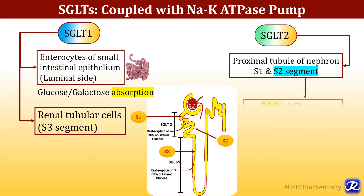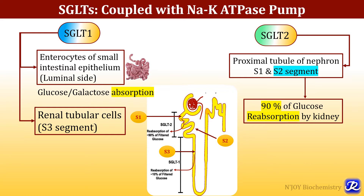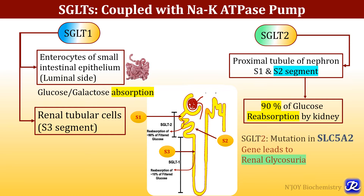SGLT2 is located in the proximal tubule of the nephron, specifically in the S1 and S2 segments. Ninety percent of glucose reabsorption by the kidney occurs in the S2 segment, where SGLT2 is located. If there is a mutation in the gene SLC5A2, which codes for SGLT2, it leads to renal glycosuria. This is the clinical correlation.